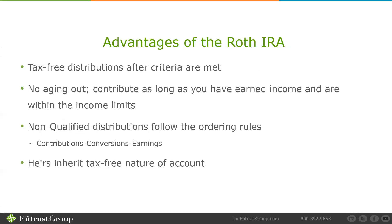The advantages of a Roth IRA: tax-free distributions after the criteria are met — five years and one of the four qualifying events: death, disability, attainment of 59 and a half, or up to $10,000 of earnings for a first-time home purchase. There's also no aging out — you can contribute as long as you have earned income. Many people who retire from their current job but do something else still have earned income — wages for services performed — and can continue making contributions to a Roth IRA to build their nest egg.